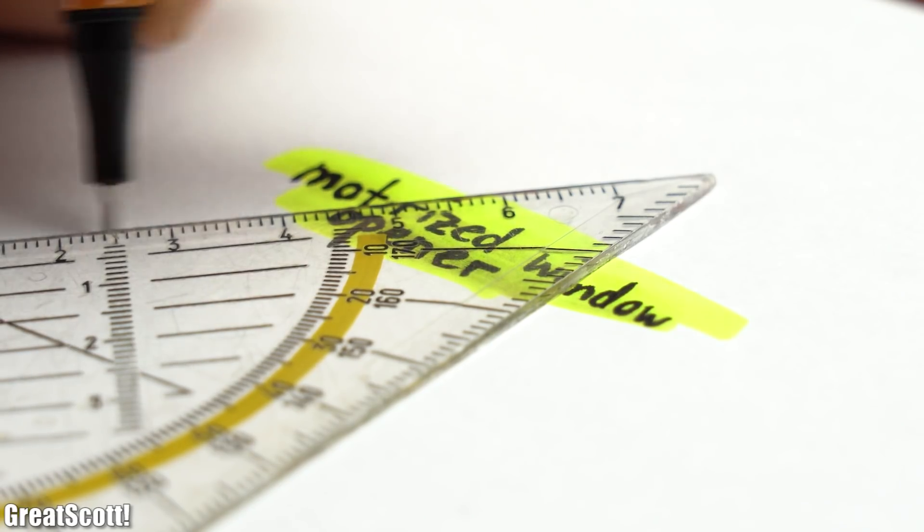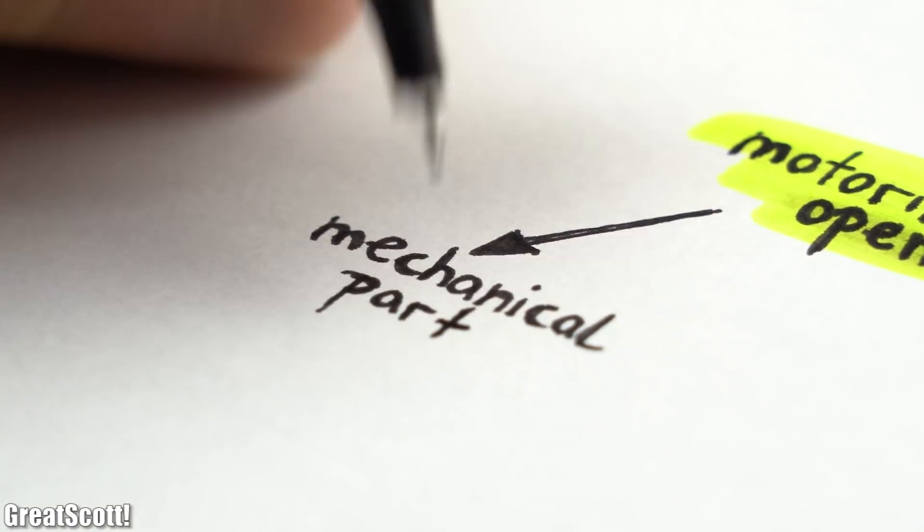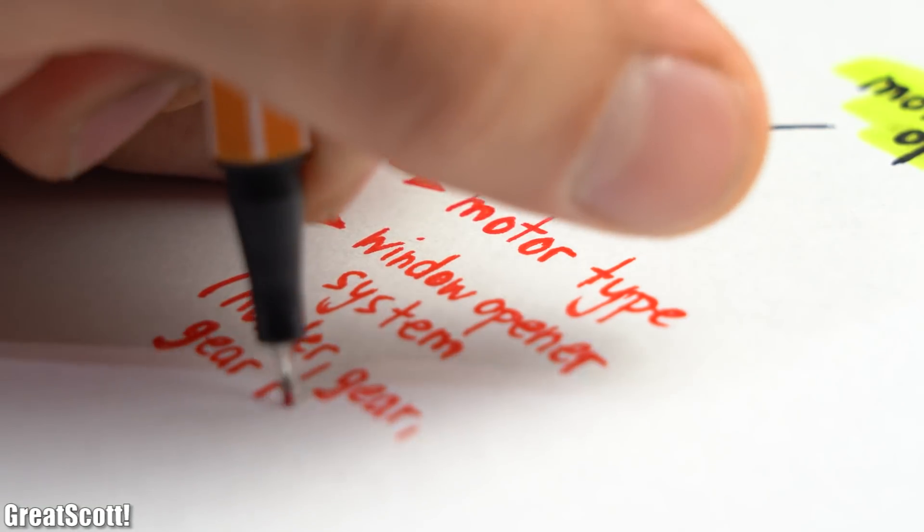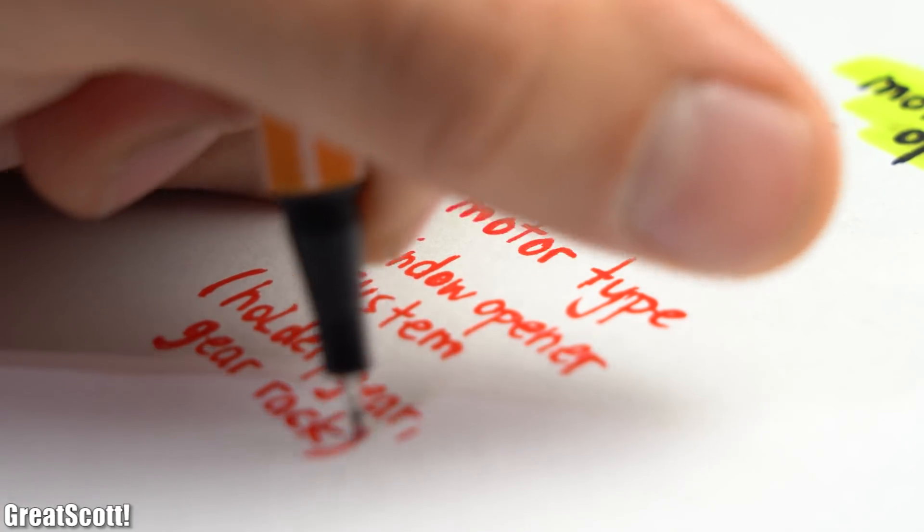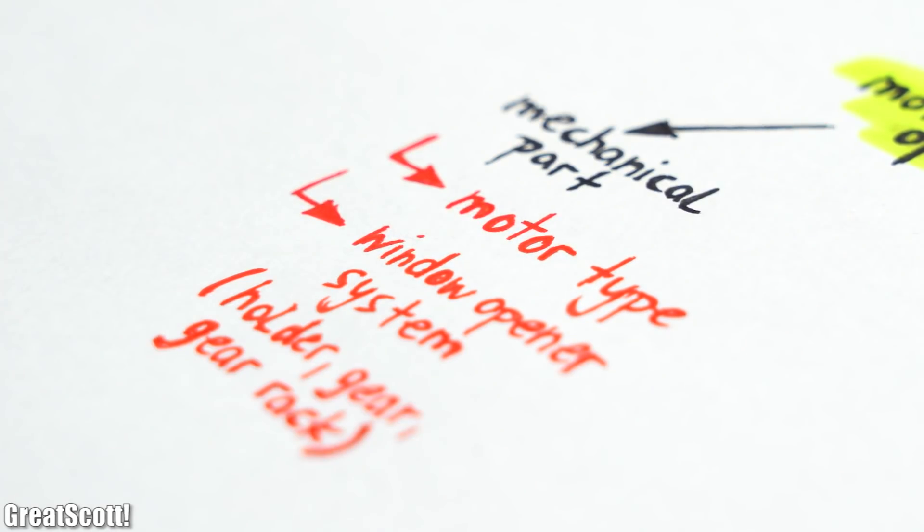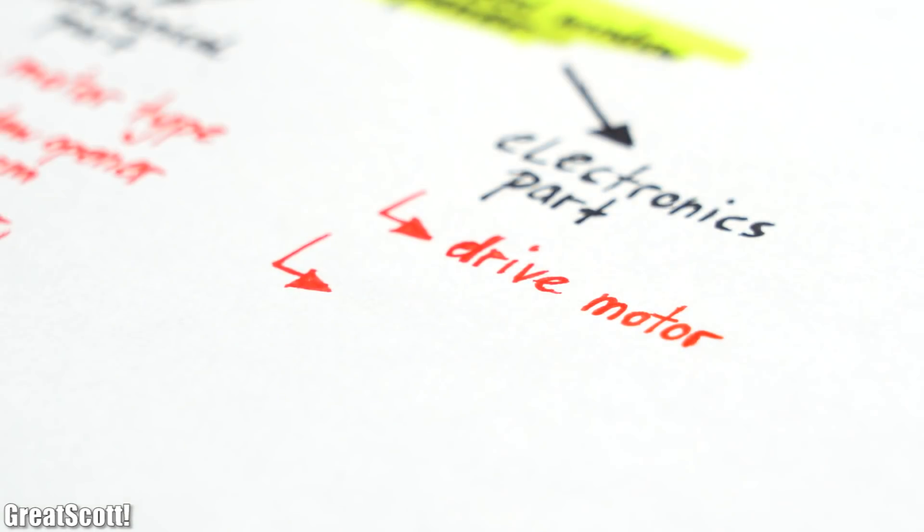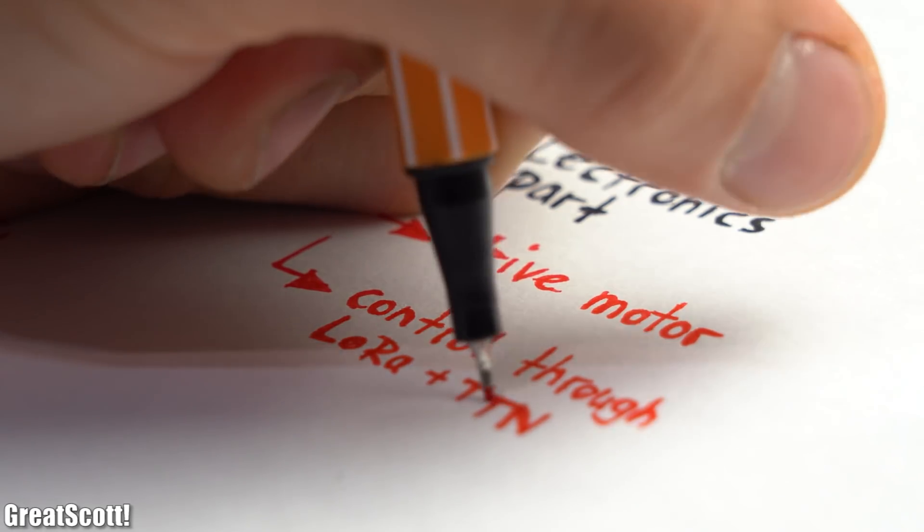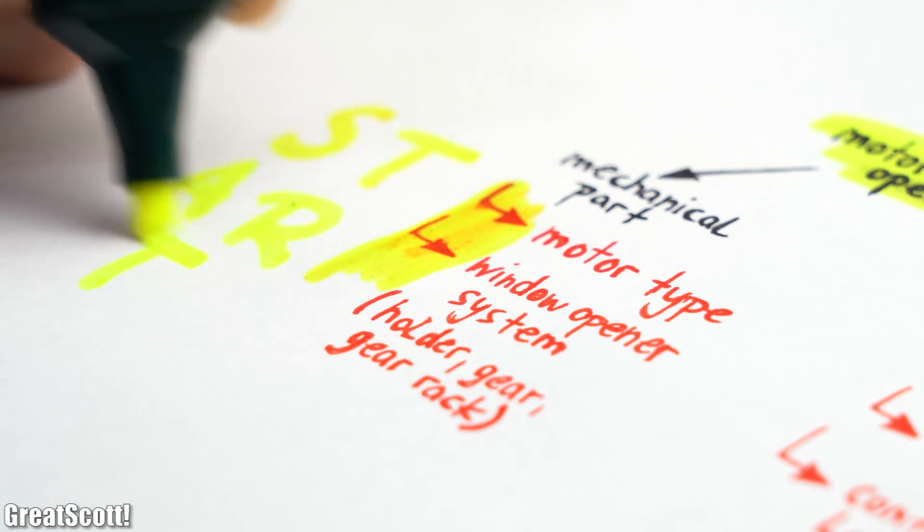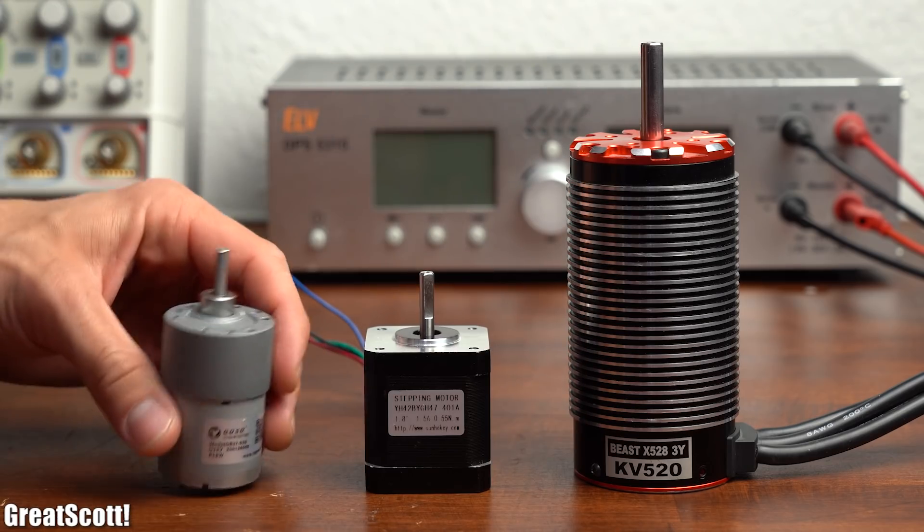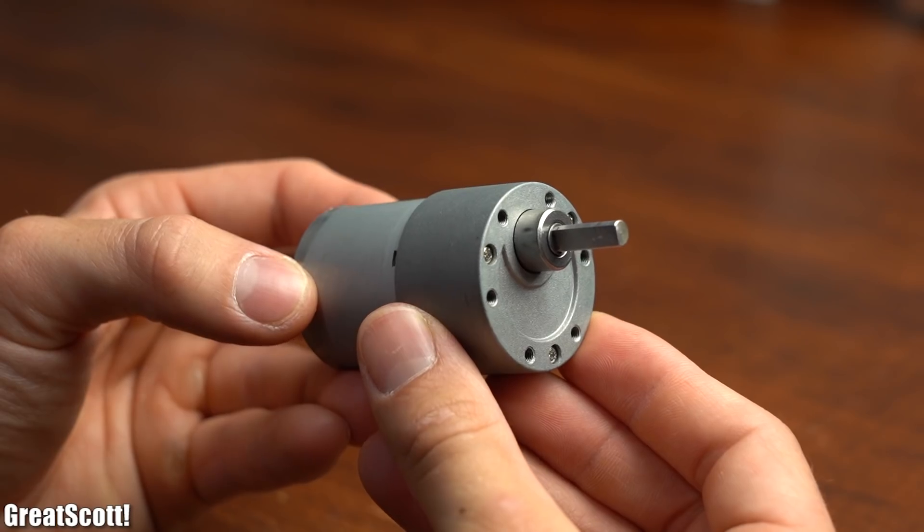With that out of the way let's think about the motorized window opener which consists of a mechanical part where we have to decide on a motor type and create a suitable mechanical system consisting of a motor holder, gear and gear rack and an electronics part in which we have to figure out how to drive the motor and how to control it through LoRa and the things network. Let's begin with the mechanical side by choosing between these three motor types, a BLDC motor, a stepper motor or a DC motor.